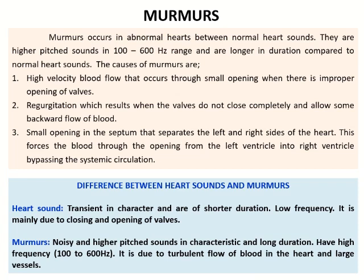Murmurs are named as noise heard due to abnormal function of the heart. The frequency of murmurs ranges from 100 to 600 Hz, sometimes up to 1000 Hz. They are due to high velocity blood flow through a small opening where there is improper opening or closing of a valve, or regurgitation where valves do not close completely and allow backward flow of blood. A small opening in the septum separating the left and right sides of the heart forces blood from the left ventricle to the right ventricle, bypassing the systemic circulation.